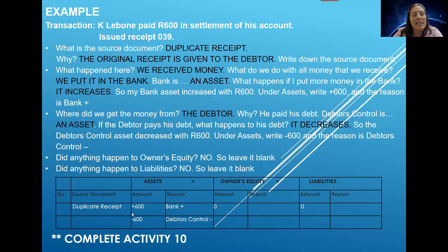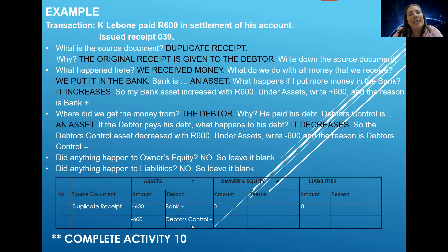Can you see that at the end of this transaction the net effect is basically zero? Why? Plus 600 minus 600 gives me zero. So one asset increased, but at the same time another asset decreased. So the total value of this business's assets did not change after this transaction because we dealt with two assets — one increased, the other one decreased, so the net effect is zero.